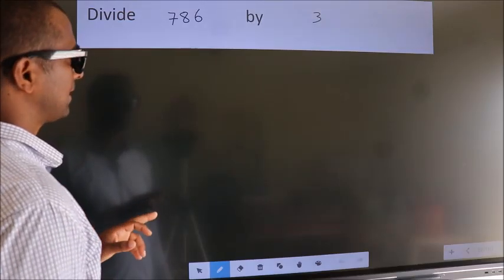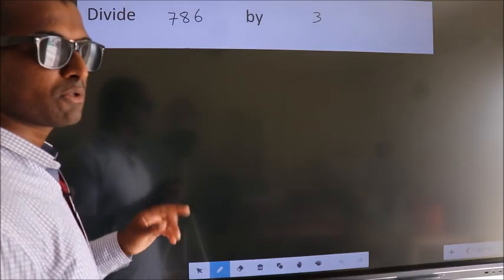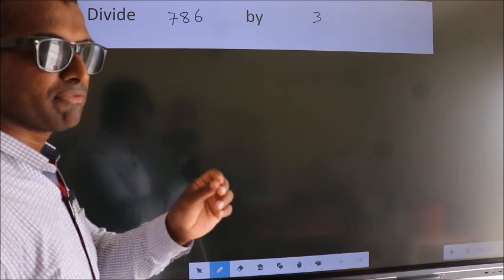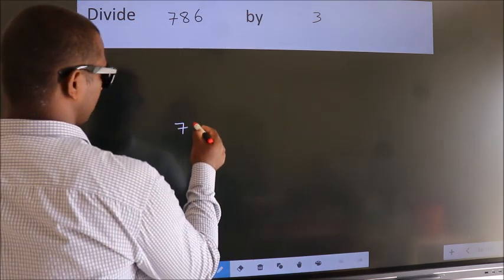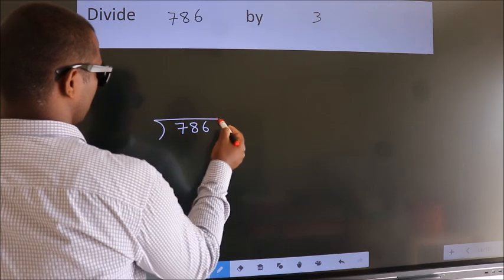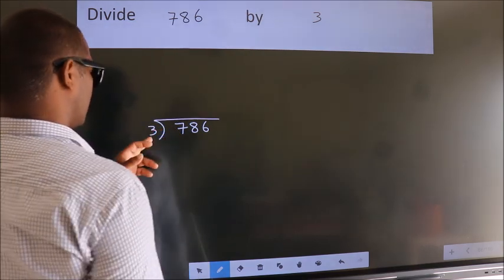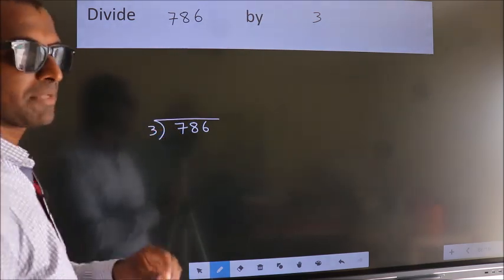Divide 786 by 3. To do this division, we should frame it in this way: 786 here, 3 here. This is your step 1.